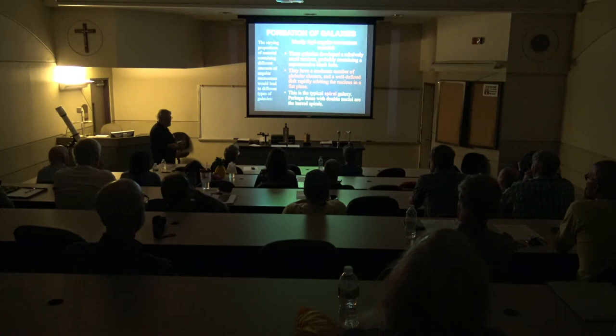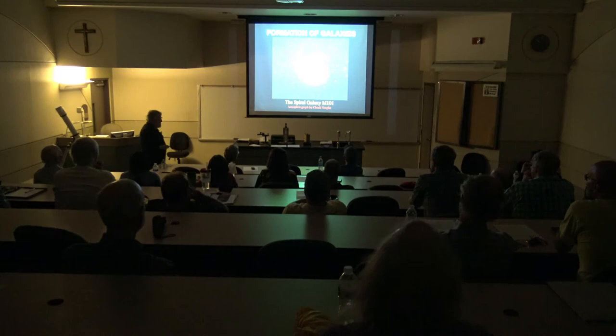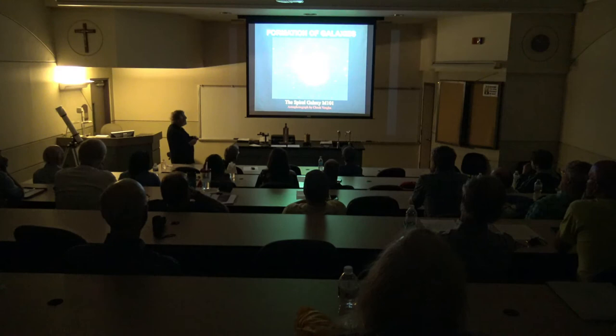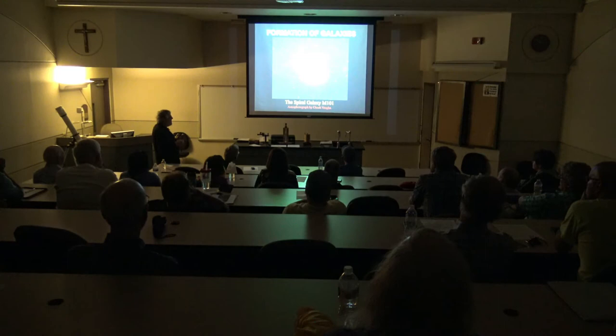Maybe galaxies with double nuclei are the barred spirals — that's an unorthodox opinion on my part. Here's a typical spiral galaxy with a bright nucleus and arms coming out from it, probably with a supermassive black hole at the center.